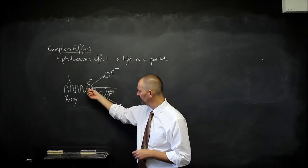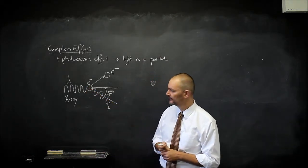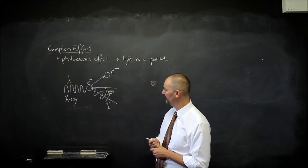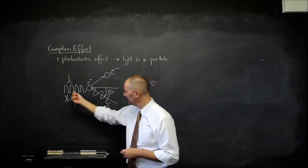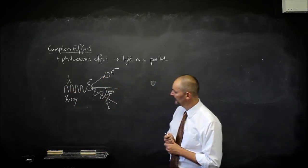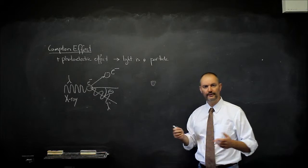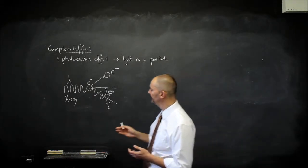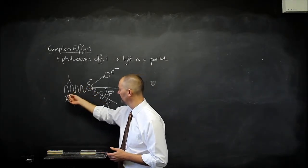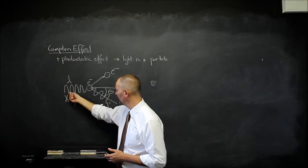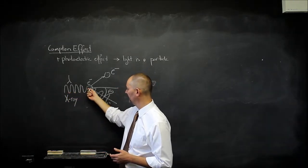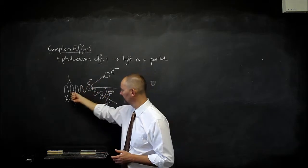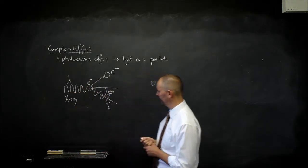This electron has mass and it has scattered. For that to happen, this incident X-ray should also have had momentum. Because momentum before: the electron was stationary, so its momentum was zero; the X-ray was moving. So for the electron to gain momentum, the X-ray also had to have momentum.